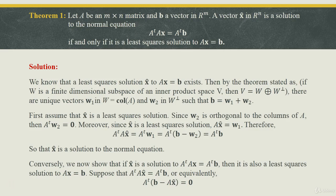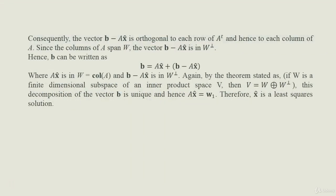So x̂ is a solution to the normal equation. Conversely, we now show that if x̂ is a solution to A^T A x̂ = A^T b, then it is also a least square solution to Ax = b. Suppose A^T A x̂ = A^T b, or equivalently A^T (b − Ax̂) = 0, meaning (b − Ax̂) is orthogonal to each row of A^T and hence to each column of A.